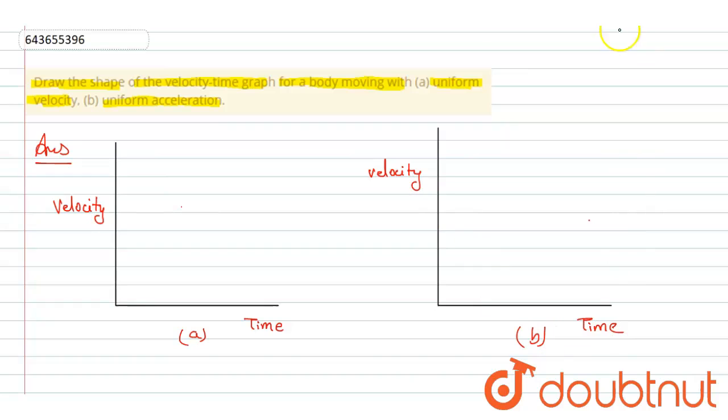Now the graph will be like this. For uniform velocity, the graph is like this - here it shows the uniform velocity.